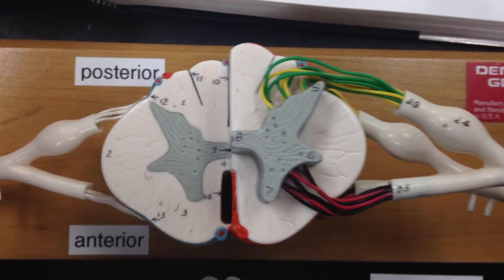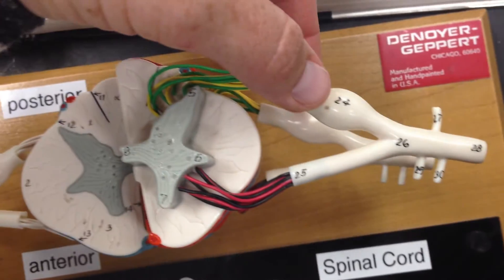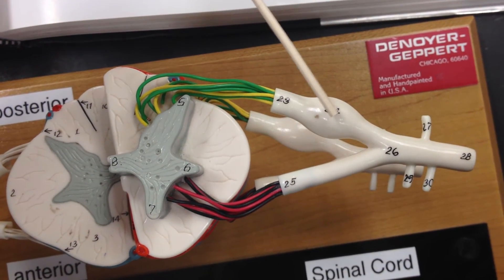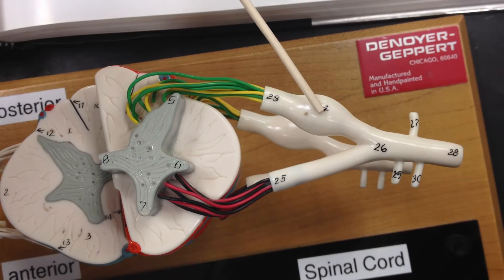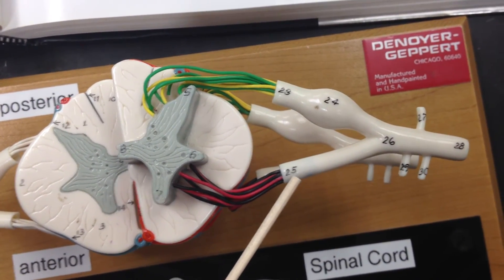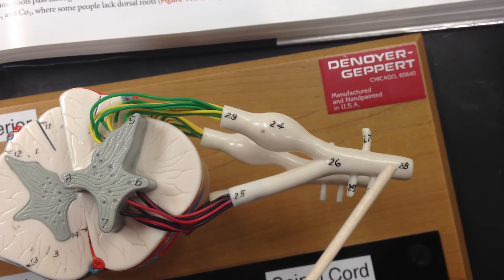Then there's the dorsal root, the dorsal root ganglion, the ventral root, and then the spinal nerve, which is formed when the dorsal and ventral roots merge.